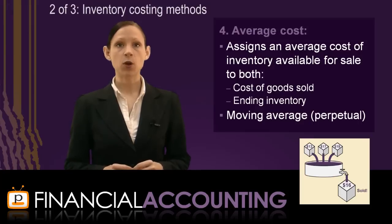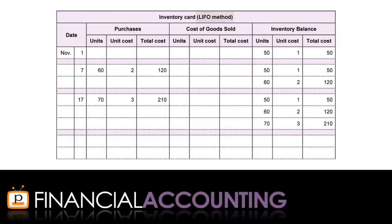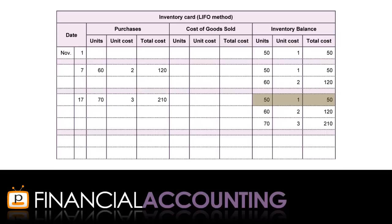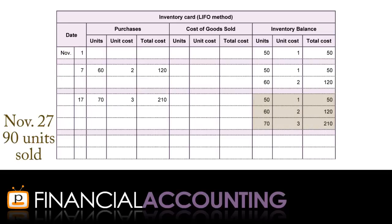Let's now look at a simple example of how to apply the LIFO assumption under the perpetual inventory system. We can see from the inventory card that we commenced the accounting period with 50 units at a cost of one dollar each. Two purchases were made during the period: 60 units for two dollars each on the 7th and 70 units for three dollars each on the 17th. The inventory balance after these two purchases records a separate line for each unique unit cost. On the 27th, 90 units were sold. Under LIFO, we assume these items sold were from the most recent purchase — the 70 units at three dollars each.